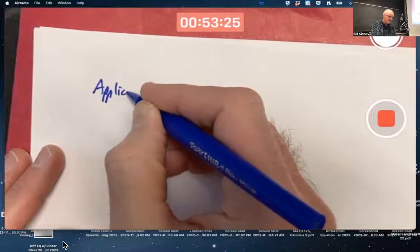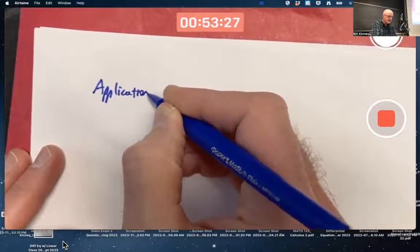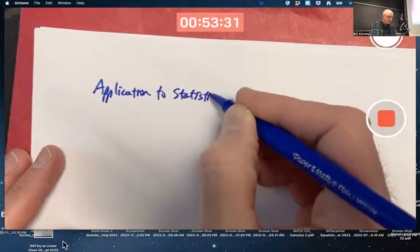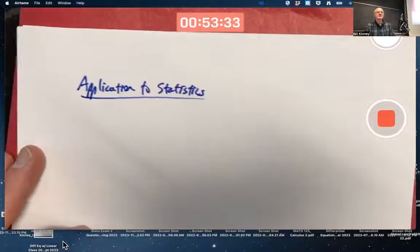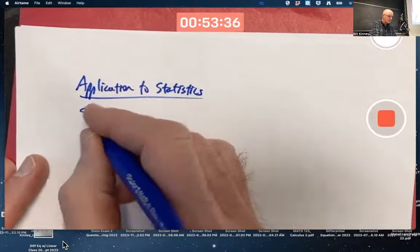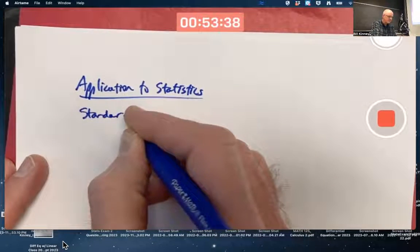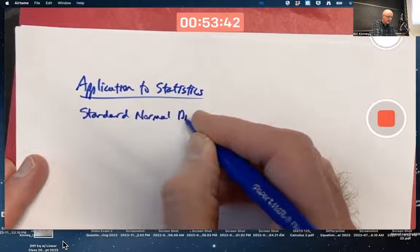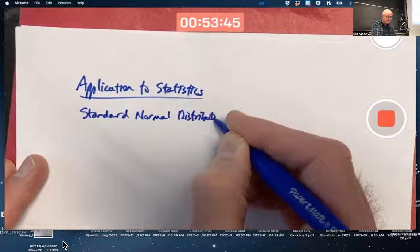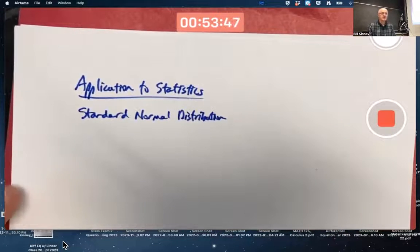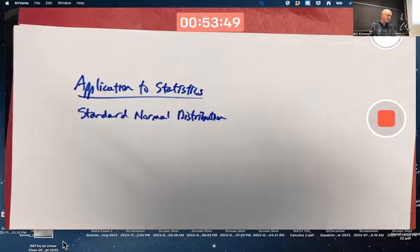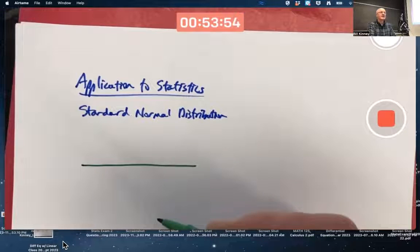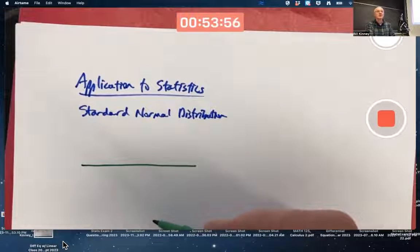Let's look at an application of integrals and their properties to statistics. In statistics, we have something called the standard normal distribution. There are also just plain old normal distributions. The standard normal distribution is a very special curve. You might say it's the most useful curve in the universe.